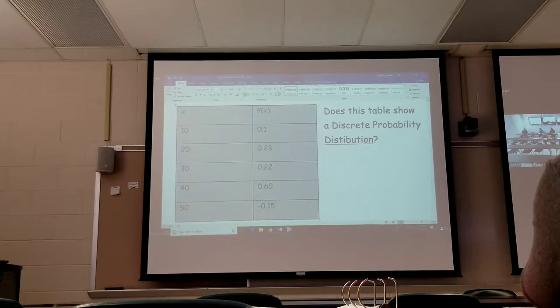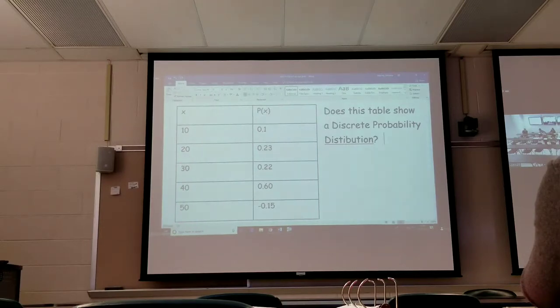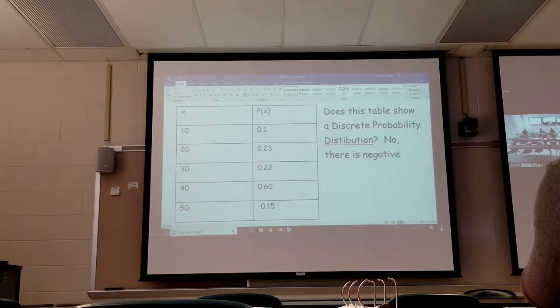Is anything odd over the P of X column? We have a negative. So the answer to this is no. There is a negative probability, and you don't have to go any further than that. That's probably negative.